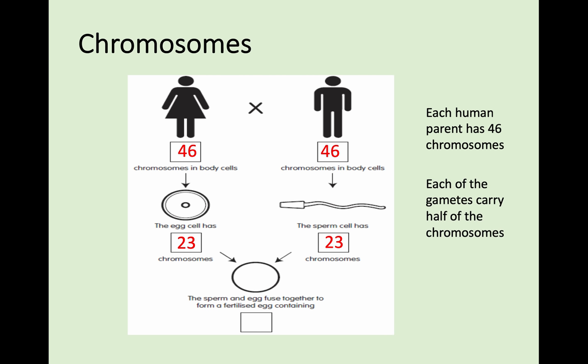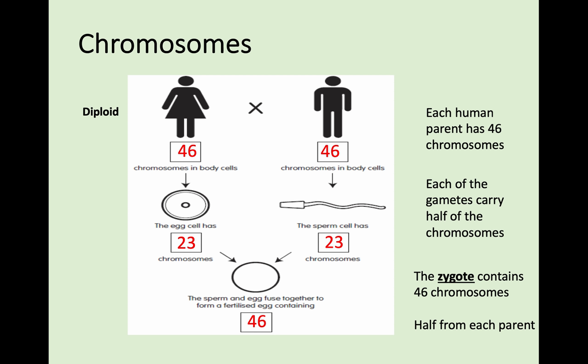The sex cells carry half the chromosomes because they are both going to combine to produce a 46-chromosome zygote. The zygote — the beginning of an embryo, fetus, and eventually a baby — contains 46 chromosomes: 23 from the mother and 23 from the father, produced through their gametes. The female egg gamete and the sperm cell each contribute 23 chromosomes. We refer to body cells as diploid, sex cells as haploid, and the resulting zygote is diploid.